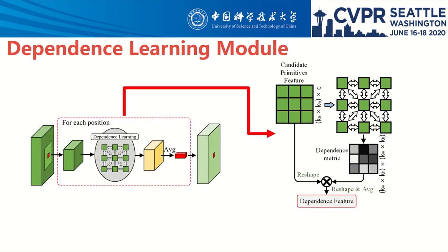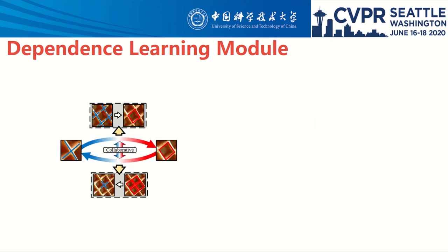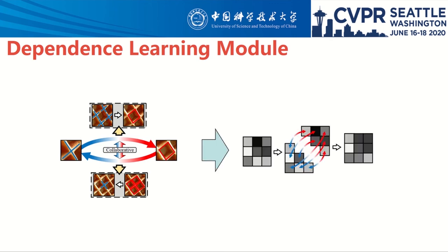The Dependency Learning Model is used to establish the dependency relationship among multiple candidate primitives in the local scope. Furthermore, to capture the correlation between primitives, we propose the two-way collaborative method, improving the dependency model's ability by introducing correlations between the two-way relation.